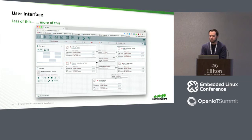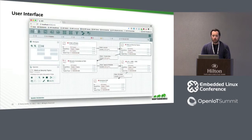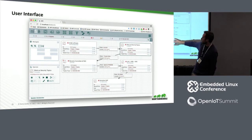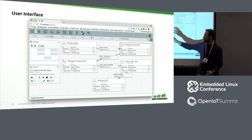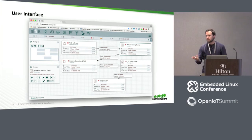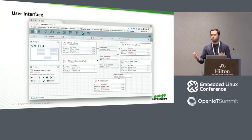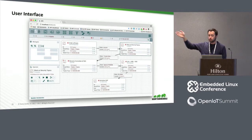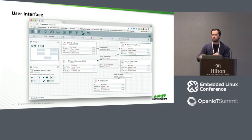That leads to something like this — on what we call the canvas, you have processors with connections between them. On the right are the navigate and operate palettes, which allow you to perform actions — if you've ever used Photoshop, it's very similar. Along the top you have components you can drag onto the flow. And in the far right, the hamburger menu is where you can access global controls like access controls, users and policies, and things like that.